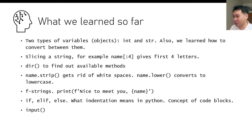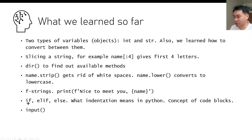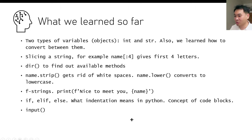In the first lesson we also learned about f-strings — you can replace part of the text with the value of a variable. For example, if name is 'Daniel', using the f-string will render as 'nice to meet you Daniel.' We also learned about conditionals — if, elif, else — and what indentation means in Python, especially for those. Indentation is really important, along with the concept of code blocks, and we also covered the input function. If any of this doesn't sound familiar, review lessons one and two before continuing.